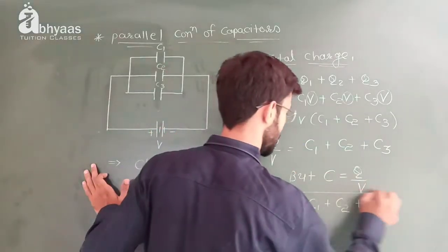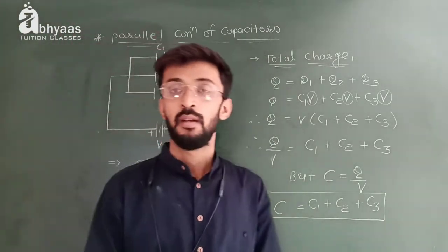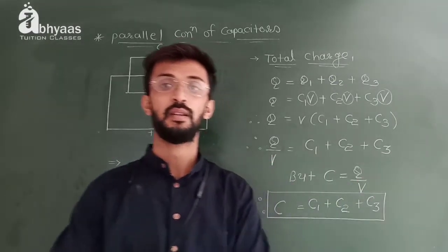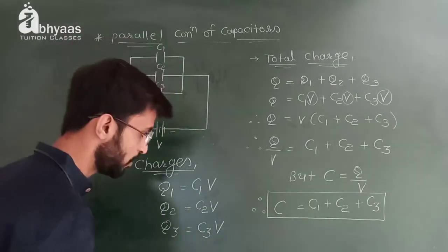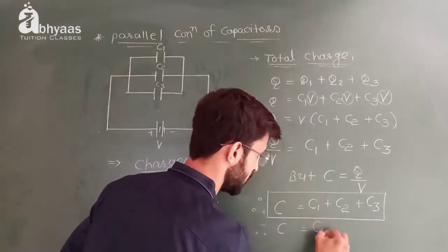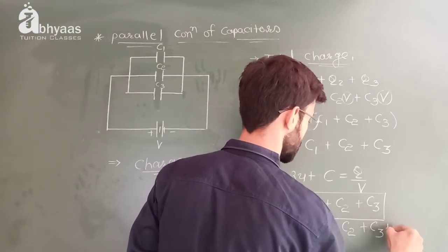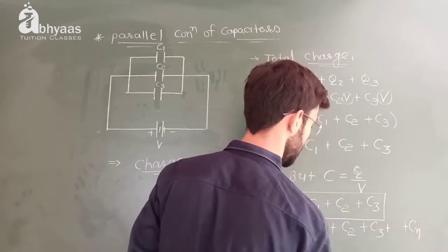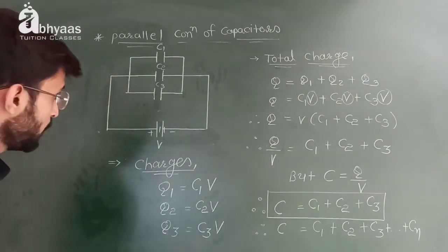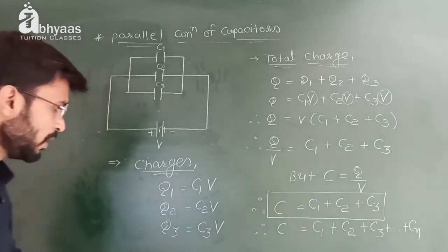So if we have n capacitors available, that means infinite number of capacitors are available, what will we change in the formula? C is equal to C1 plus C2 plus C3 plus dot dot dot plus Cn.